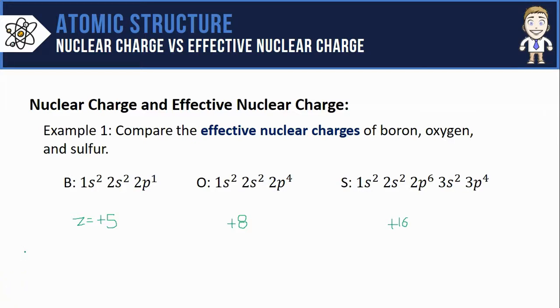Next, we need to figure out how much shielding takes place from the core electrons in each atom. I'm going to go ahead and label those inner shielding electrons on each configuration. Here's boron's, oxygen's, and here's sulfur's.